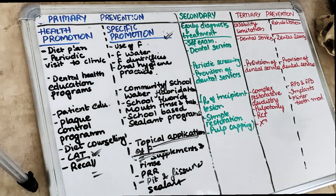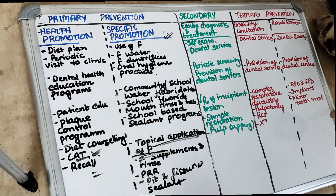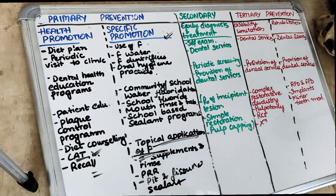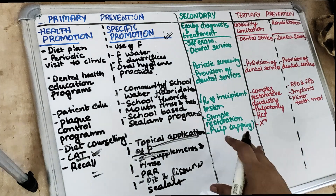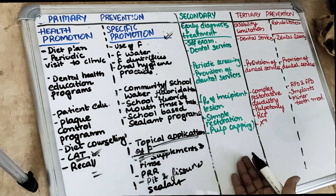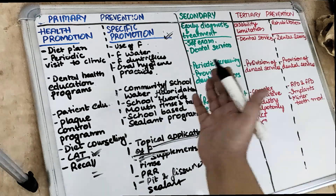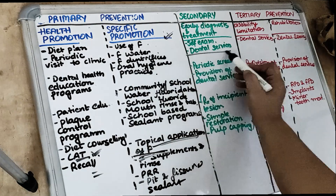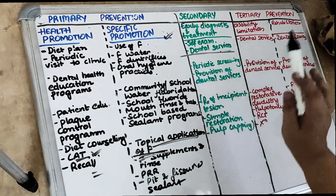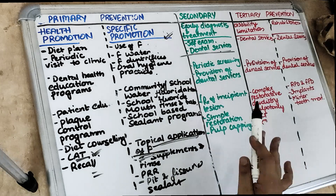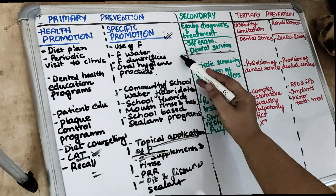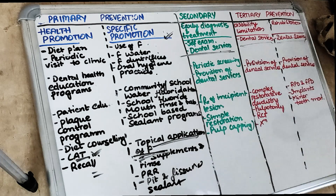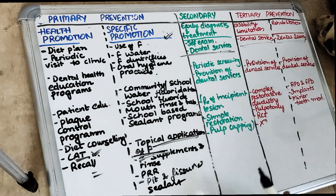Then comes the secondary level. Secondary level is when we diagnose caries at the early level — there is just the starting of the disease. What do you do? You do a simple restoration at the professional level. At the individual level, it is going to be the use of dental services. Caries can only be prevented at the secondary and tertiary level when the individual uses the dental clinic — either at an early level or an extreme level. A patient cannot prevent it sitting at home.